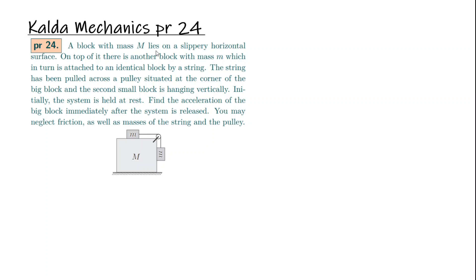A block with mass M lies on a slippery horizontal surface. On top of it there is another block with mass small m which in turn is attached to an identical block by a string. The string has been pulled across a pulley situated at the corner of the big block and the second small block is hanging vertically.